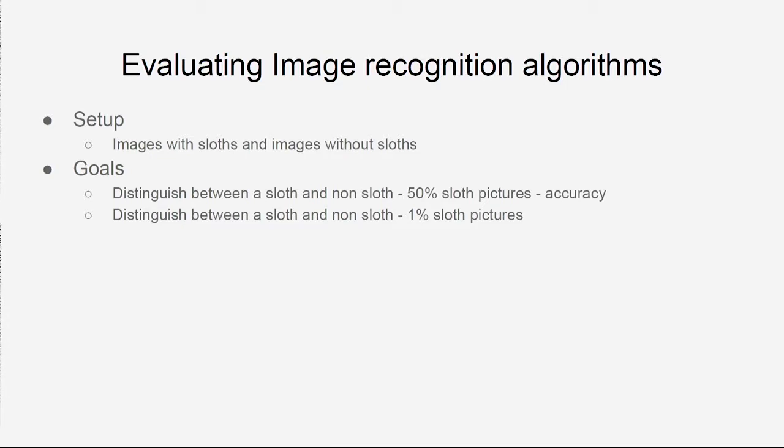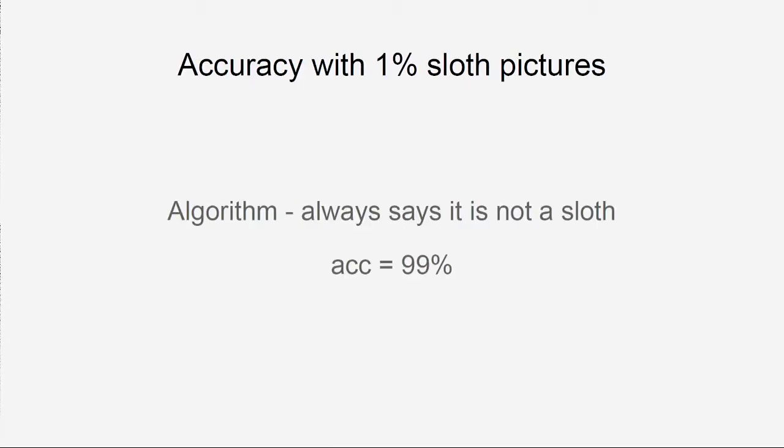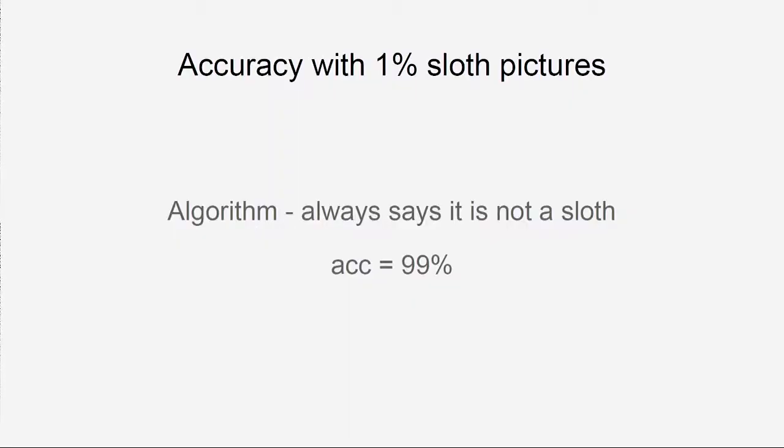What if we don't have 50% balance? If we use the same metric and we have an algorithm that just says there is no slot in any picture, we will get 99% accuracy, because 99% of the time we will be right — there will be no slot picture. But this metric is completely useless to us.